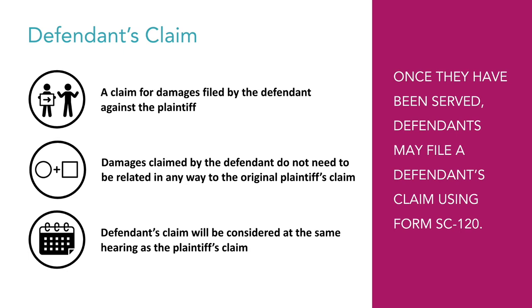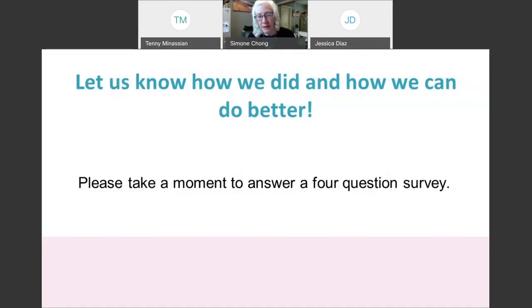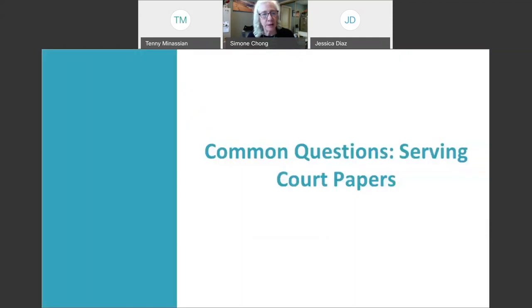If the defendant is unable to have the defendant's claim served, the defendant should notify the judge on the day of the hearing. The judge may then decide to hear, postpone, or dismiss the defendant's claim. This concludes our summary of serving court papers. Thank you for watching this pre-recorded video. Now Jessica Diaz is going to ask me some common questions that people ask us regarding the serving court papers process.